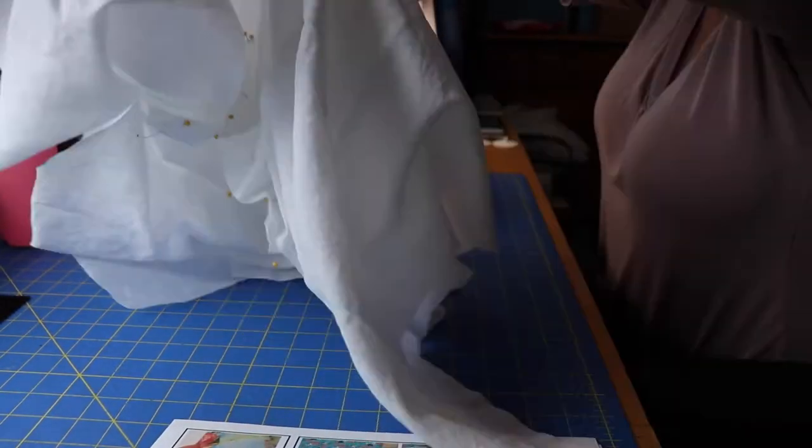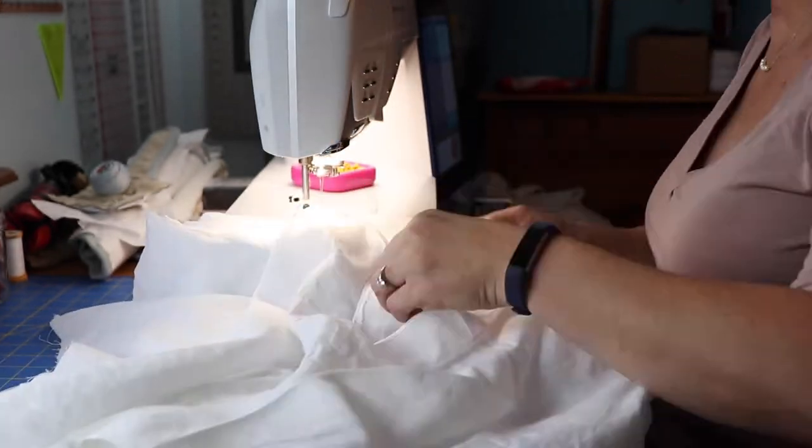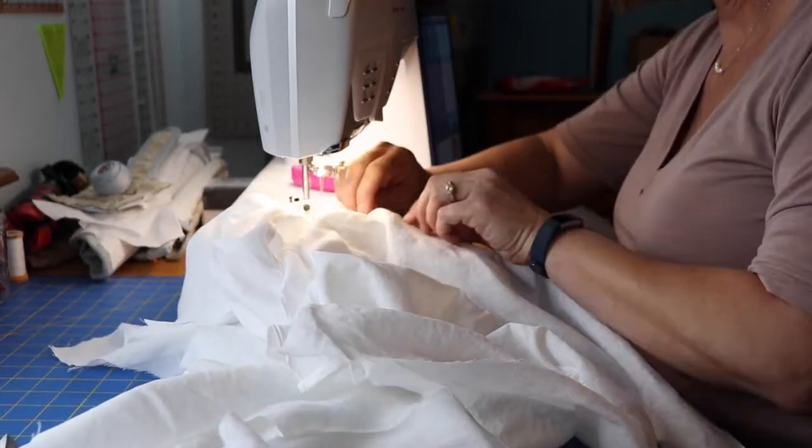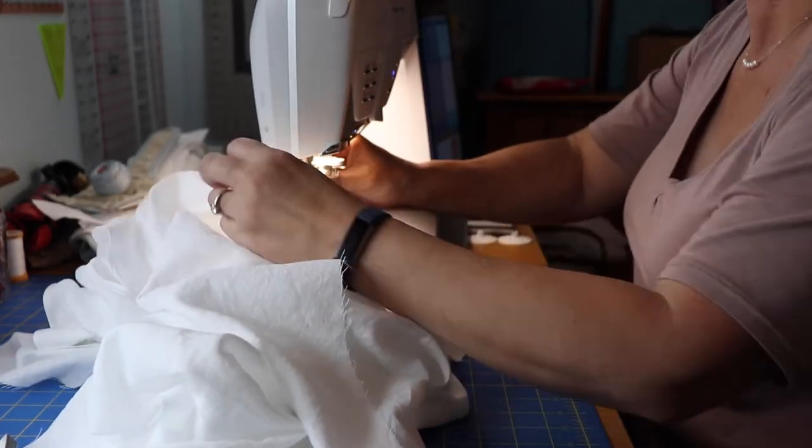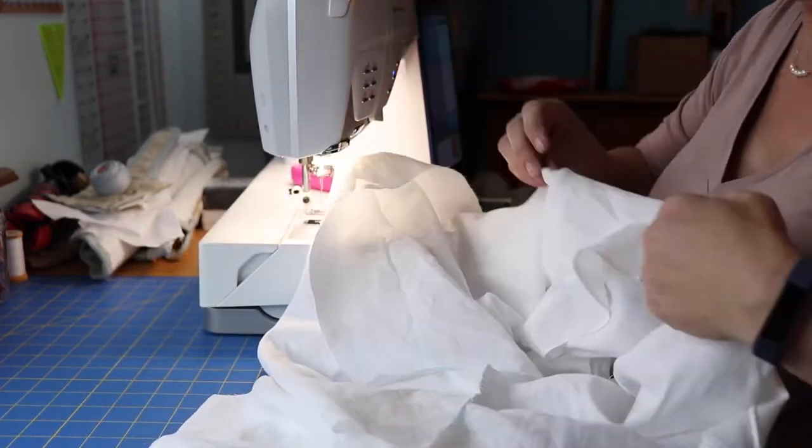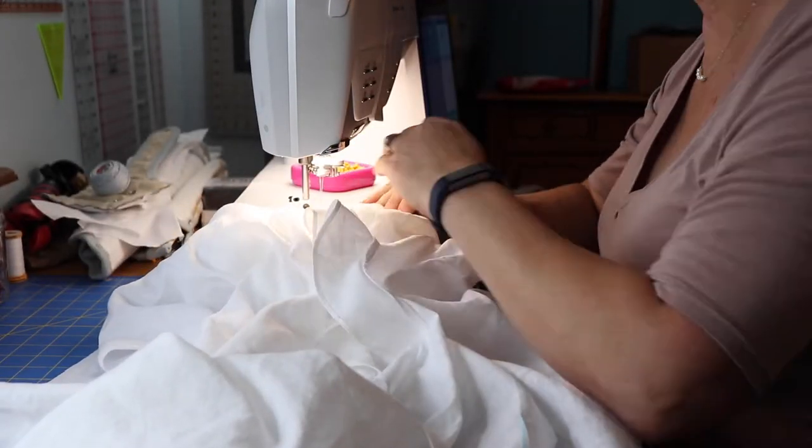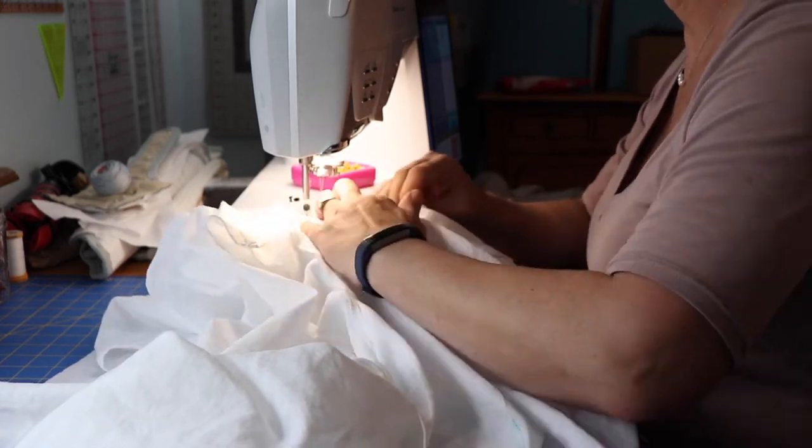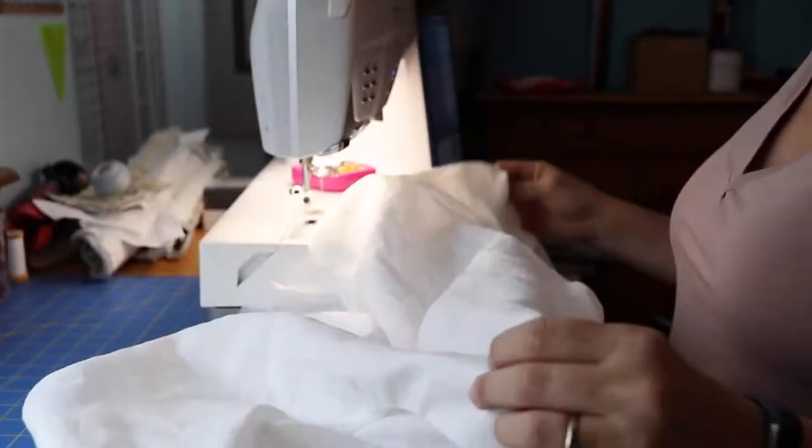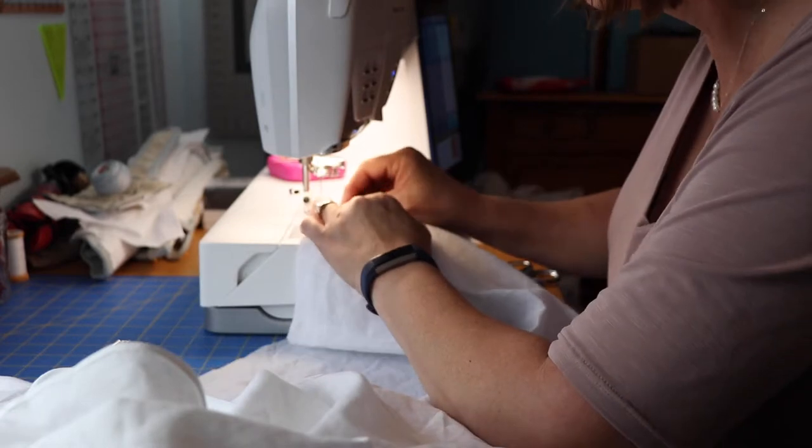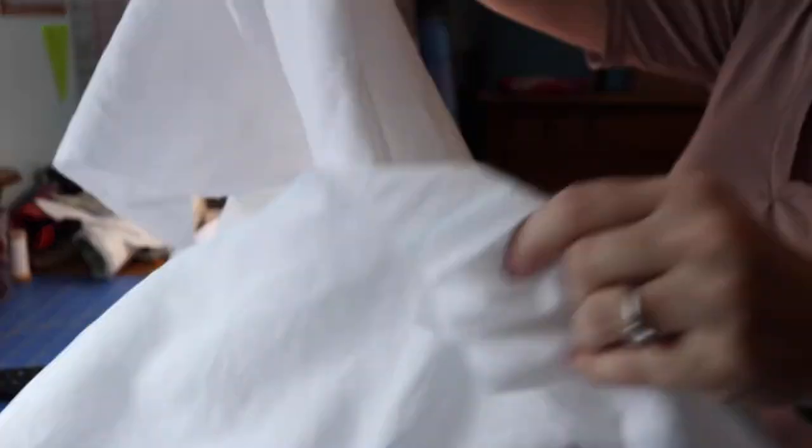And I pinned in both sleeves following the same method. What I normally do is pin that center notch and then pin the sleeve to the bodice at the armside, and then I ease the fabric between. So here I am stitching in the sleeves. Once the sleeves were stitched in, I removed the pins, pressed them, and then turned them right sides together and stitched them again, thus creating the French seam. Before I sewed up the side seams, I went ahead and did the rolled hem on both sleeves.